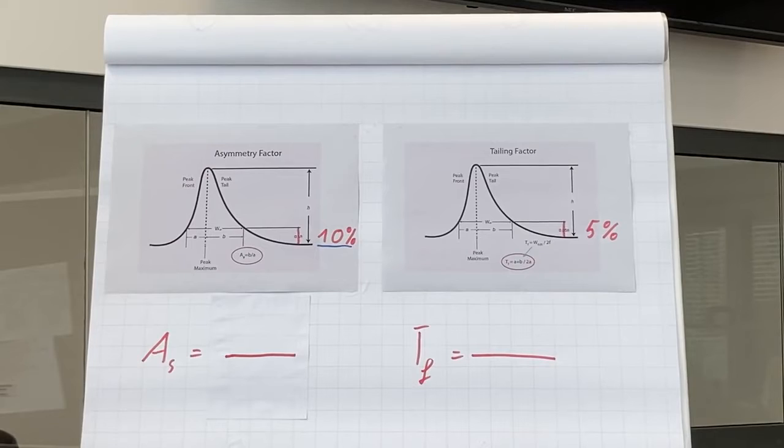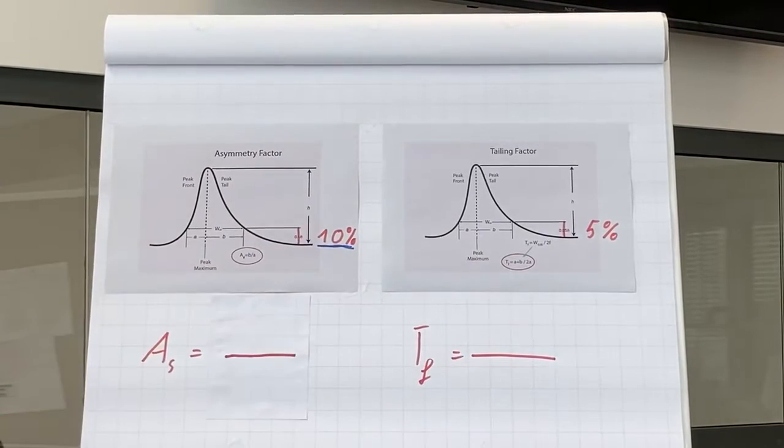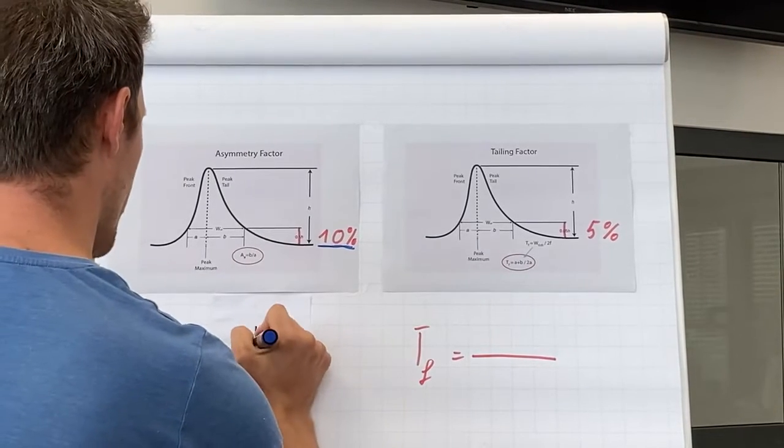Let's start with the asymmetry factor. The asymmetry factor is measured at 10% peak height above the baseline and is calculated with the following equation: A plus B divided by A.